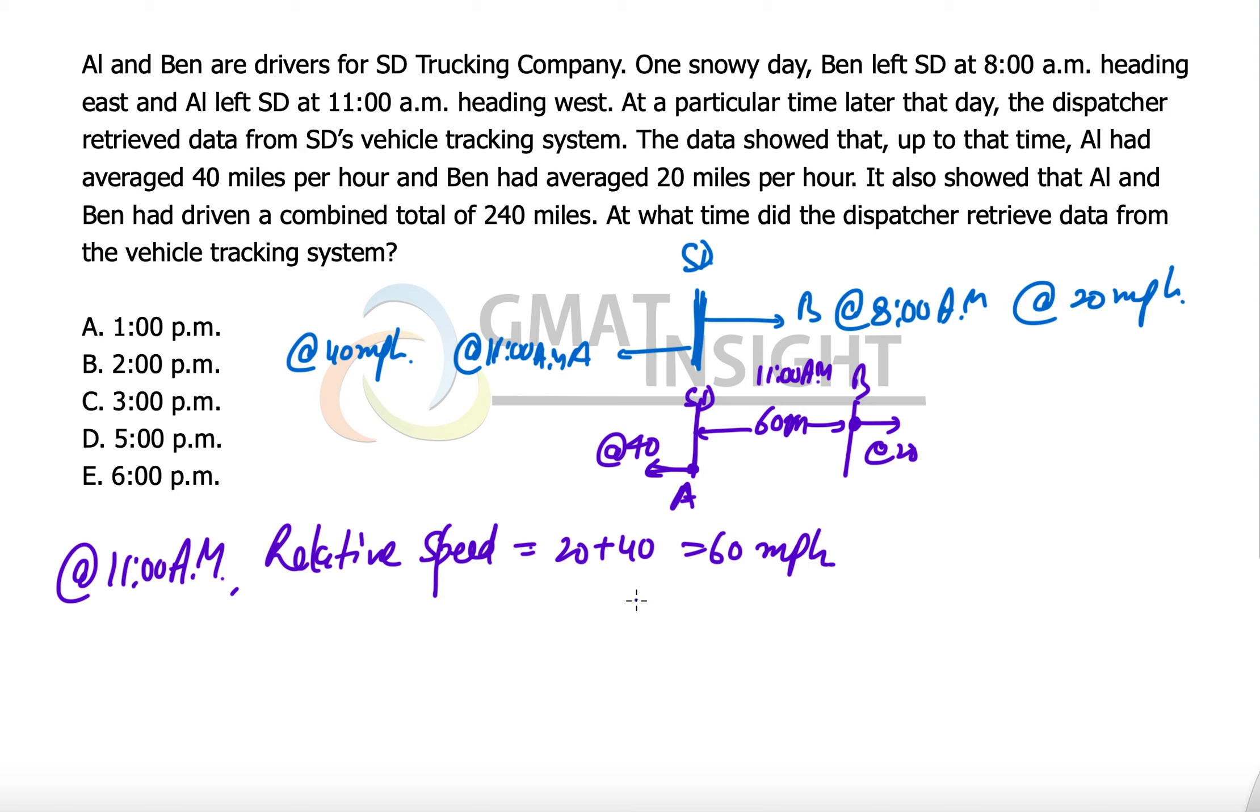Now there is a third scenario. The third scenario is when Al has reached at some place and Ben also has reached at some place. This is SD, and actually Al must have reached at some place here. So Al has covered some distance, Ben also has covered some distance, and the total distance between the two is 240. But now we need to understand that 60 miles was already traveled before Al started moving, which means at the relative speed, the distance traveled should be equal to 240 minus 60, because 60 was already traveled before 11 AM.